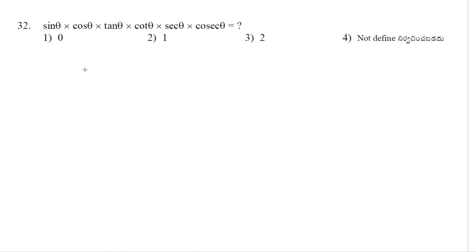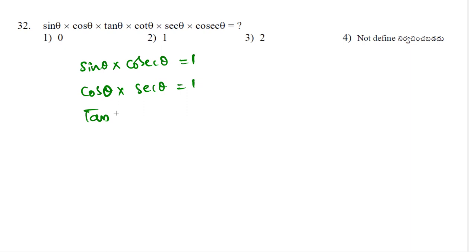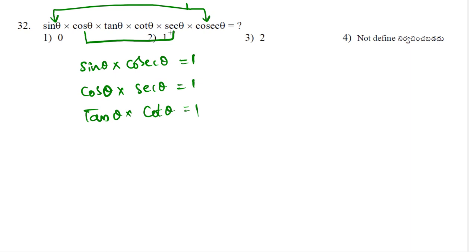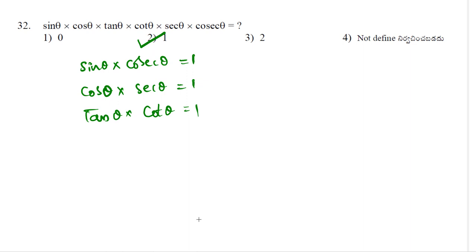sinθ × cosθ × tanθ × cotθ × secθ × cosecθ equals what? We know that sinθ × cosecθ = 1, cosθ × secθ = 1, and tanθ × cotθ = 1. Taking these combinations: sinθ × cosecθ = 1, cosθ × secθ = 1, and tanθ × cotθ = 1. So 1 × 1 × 1 = 1. Option 2 is the correct one.